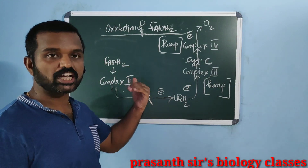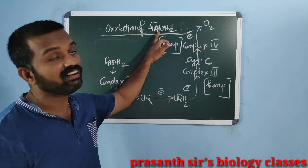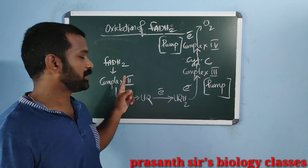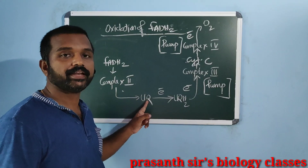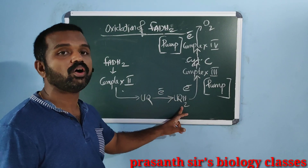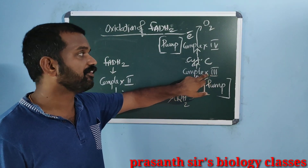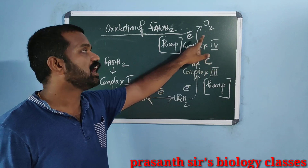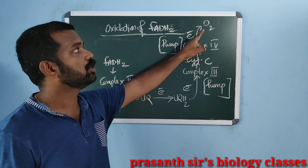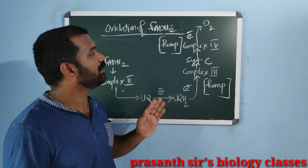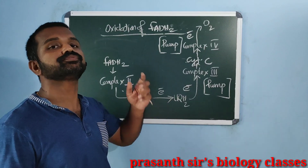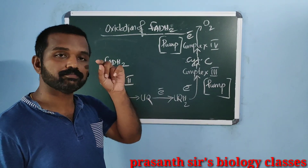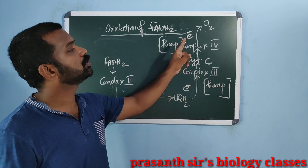Now let us see the electron transport complexes involved during the oxidation of FADH2. From FADH2, electrons are received by complex 2, then taken by ubiquinone which gets reduced to ubiquinol. Electrons are then accepted by complex 3, from where the mobile carrier cytochrome C takes electrons, which are transferred to complex 4, and finally accepted by oxygen in the matrix. During the transport of electrons from FADH2 to oxygen, 2 proton pumps are functional: complex 3 and complex 4.